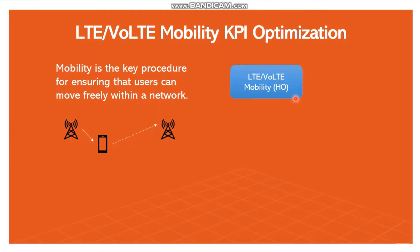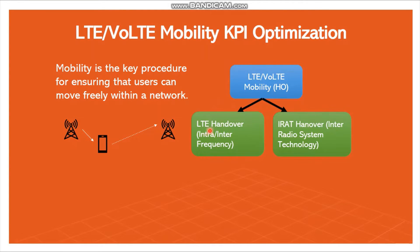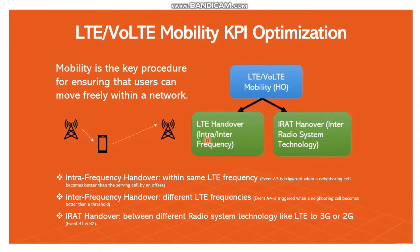In LTE, OLTE mobility handover is generally two types. One is LTE handover — intra frequency and inter frequency — and another one is the IRAT handover, also called inter radio access technology handover. Intra frequency handover means handover between the same frequency. If source site frequency is X and target site frequency is also X, it is called intra frequency handover. If source belongs to frequency X and target belongs to frequency Y, it is called inter frequency handover. For IRAT handover, if the source side belongs to LTE and the target side belongs to 2G or UMTS, then changing technology from LTE to 2G or 3G comes under IRAT handover.